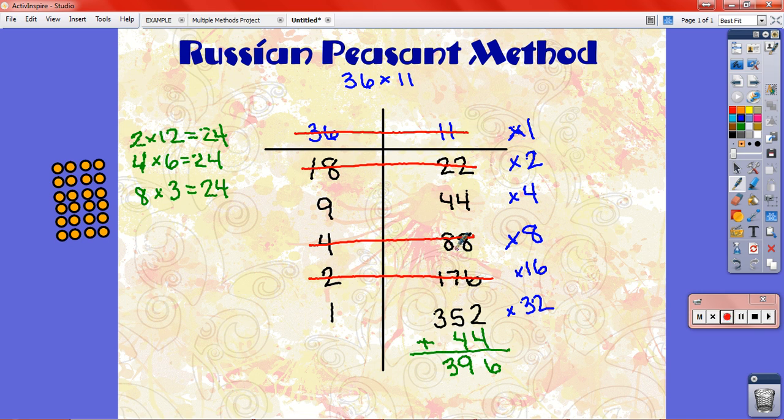So ignore the ones that are crossed out because we didn't even use those. We're just going to take the ones we used and add them together. 32 and 4 makes 36. 36 is what we were multiplying by to begin with. So basically what we did was 32 times 11 plus 4 times 11. 32 11s and 4 11s make 36 11s. So it's the same answer. That's another way that Russian peasant method works.